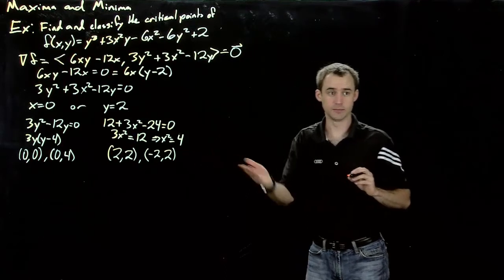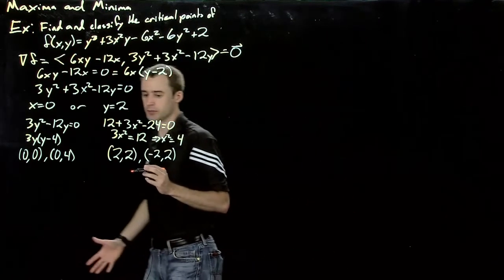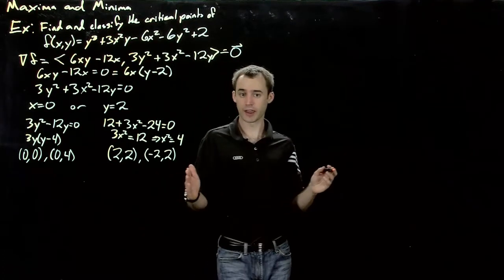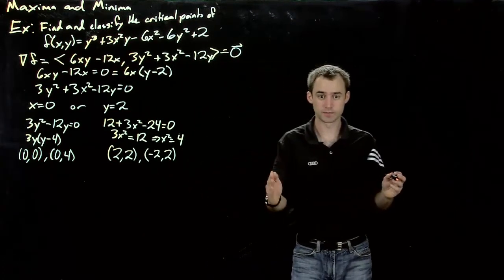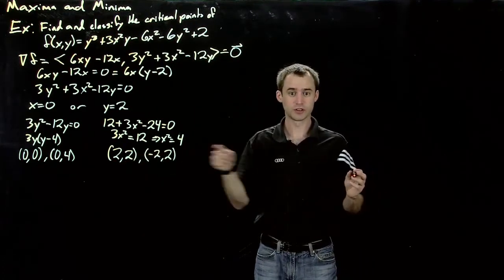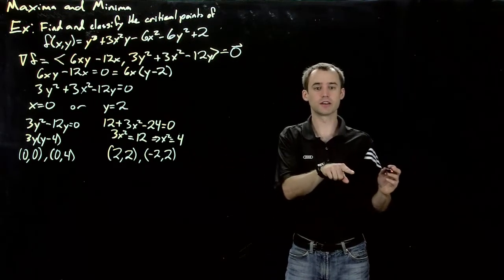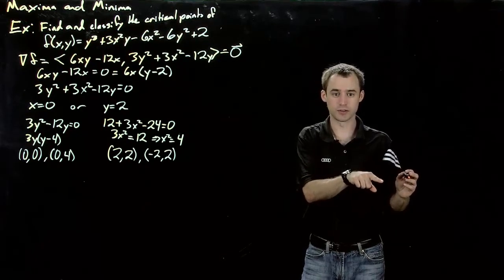Now let's actually categorize them. To categorize them, I recommend we use a chart. A chart that's going to have all the parts we need. The point itself, the Hessian, or the determinant of the Hessian more accurately. And finally, the second derivative value.